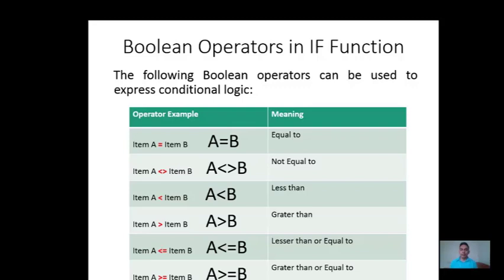For example, if you want to test whether a particular value is equal to another value, you can express it as A equals B. That means you are testing whether A is equal to B or not. If this condition is satisfied you will receive the result as TRUE. If it's not satisfied your result will be FALSE. Similarly, if you want to test whether value A is not equal to value B, you can write that expression, and Excel will return TRUE or FALSE accordingly.